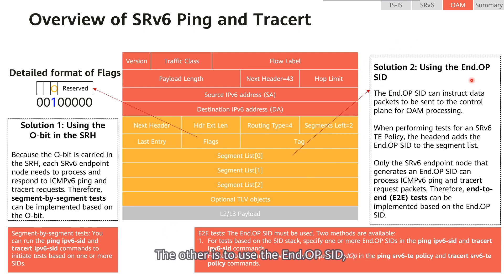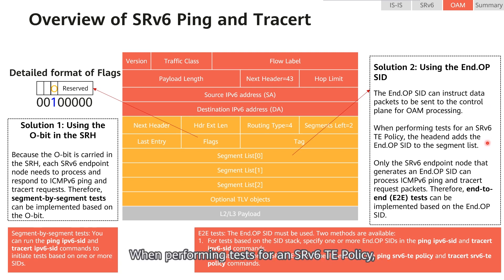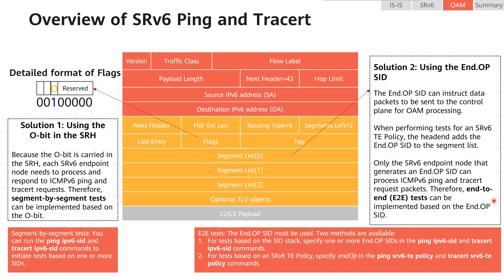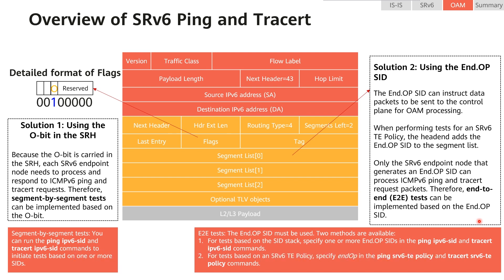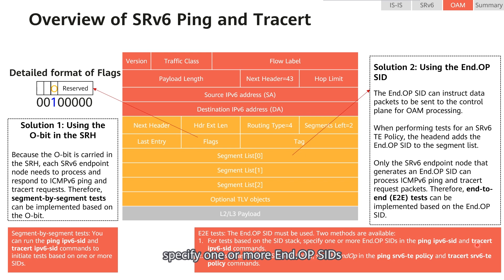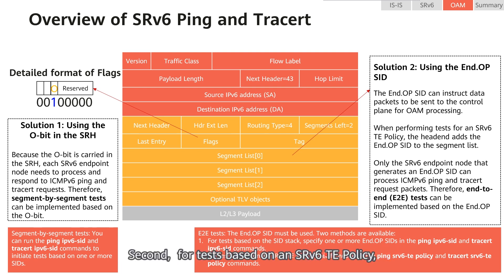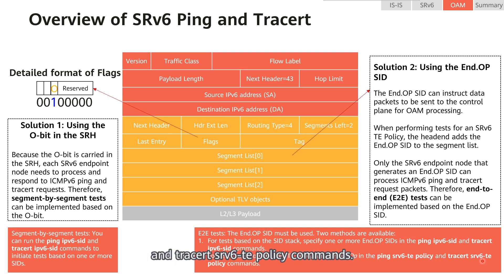The other method is to use the NOP SID, which can instruct data packets to be sent to the control plane for OAM processing. When performing tests for an SRV6TE policy, the head-end adds the NOP SID to the segment list. Only the SRV6 endpoint node that generates a NOP SID can process ICMPv6 PIN and TRACERT request packets, so end-to-end tests can be implemented. For tests based on the SID stack, specify one or more NOP SIDs in the ping IPv6 SID and tracert IPv6 SID commands. For tests based on an SRV6TE policy, specify NOP in the ping SRV6TE policy and tracert SRV6TE policy commands.